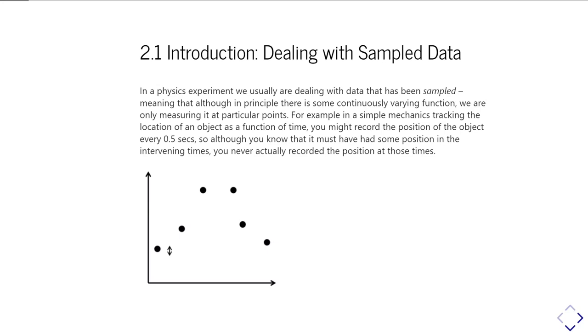But for ordinary scale of things, you can treat it as a continuous function. In practical terms, you can only measure that function at particular instances in time. For example, if you're doing a mechanics experiment tracking an object as a function of time, you might only be able to record that object every half a second. You know exactly where it is every half second, but in between, you're assuming that there's going to have varied.